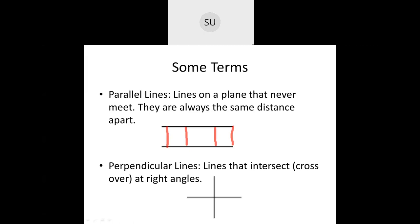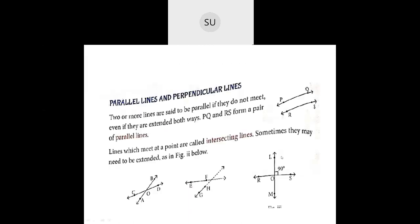Then perpendicular lines — what are perpendicular lines? Lines that intersect or cross each other at right angles. What's a right angle? It is a 90 degree angle. So when two lines cross each other or intersect each other at a right angle of 90 degrees, then they are called perpendicular lines.